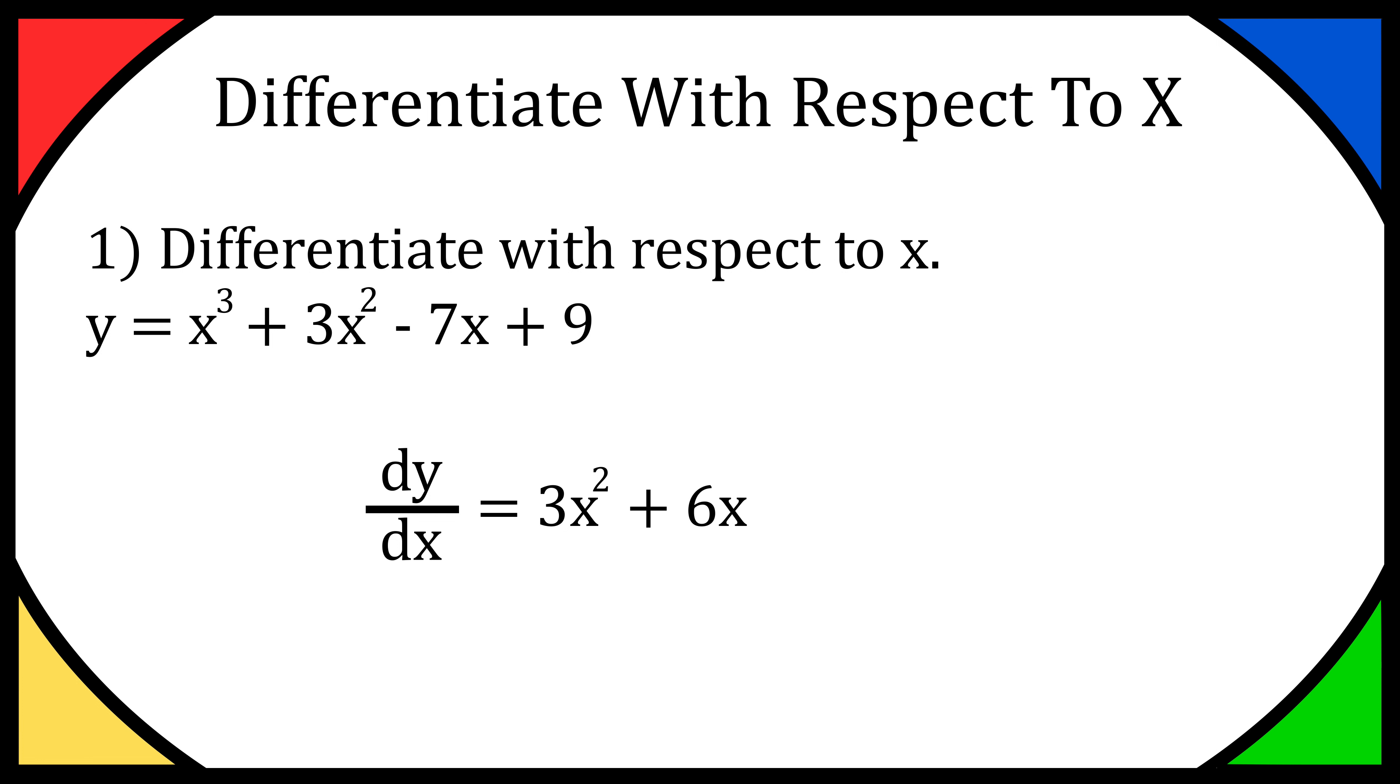Now if you have any x with a constant in front, like -7x, you can just remove the x. That's because we're effectively working with x to the power of 1. We bring that power down: -7 × 1. We've got -7x¹, and we subtract 1 from the power, giving us x⁰.